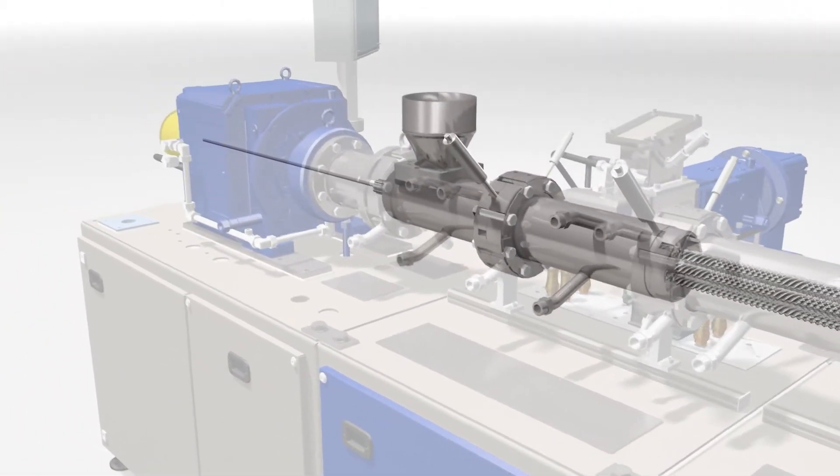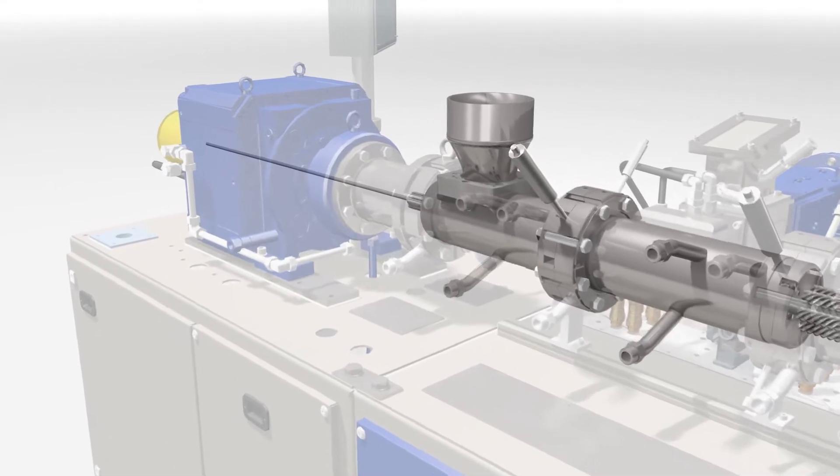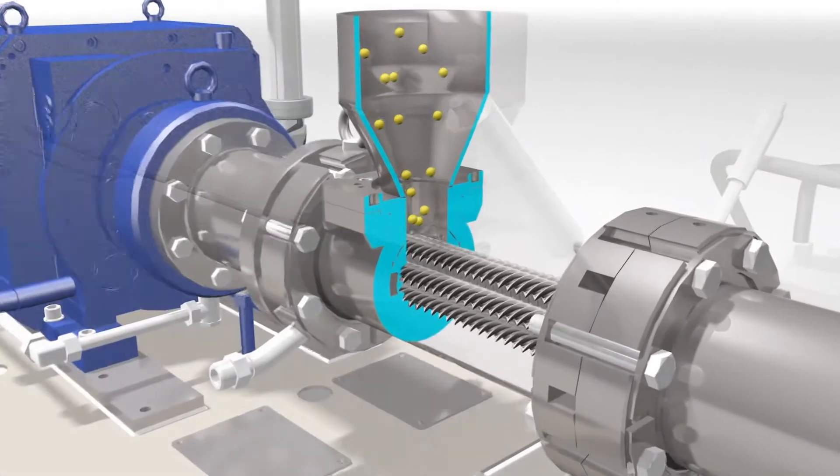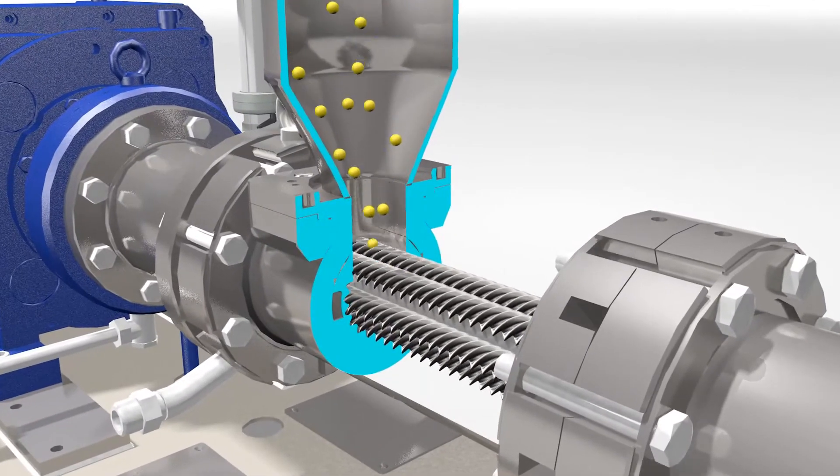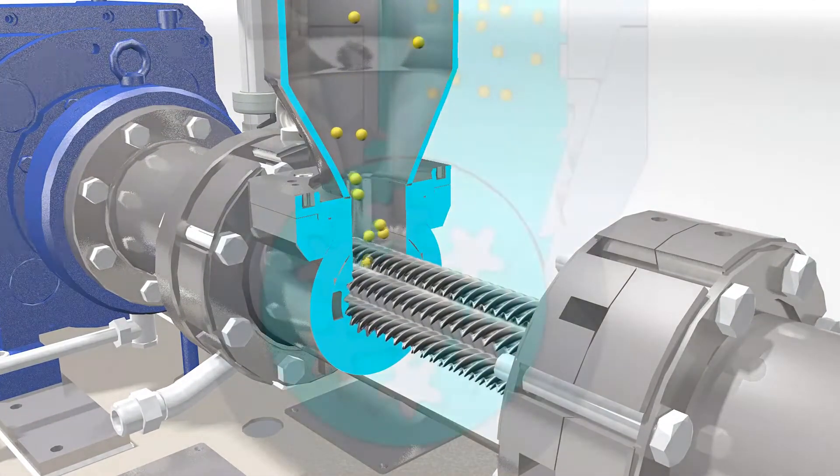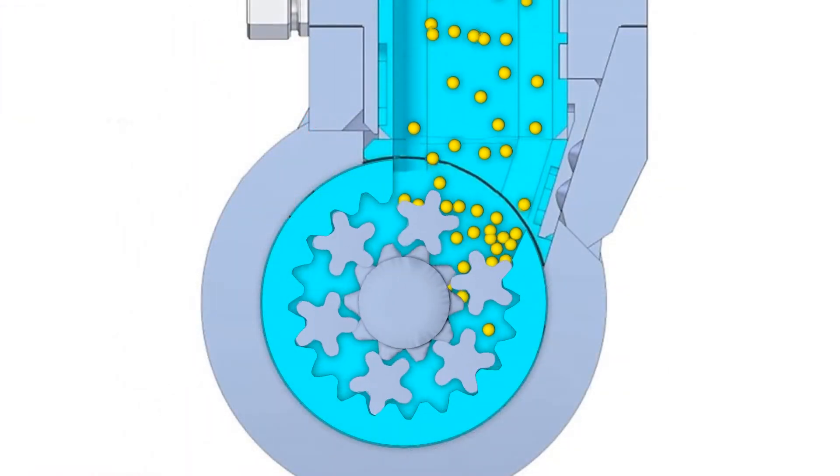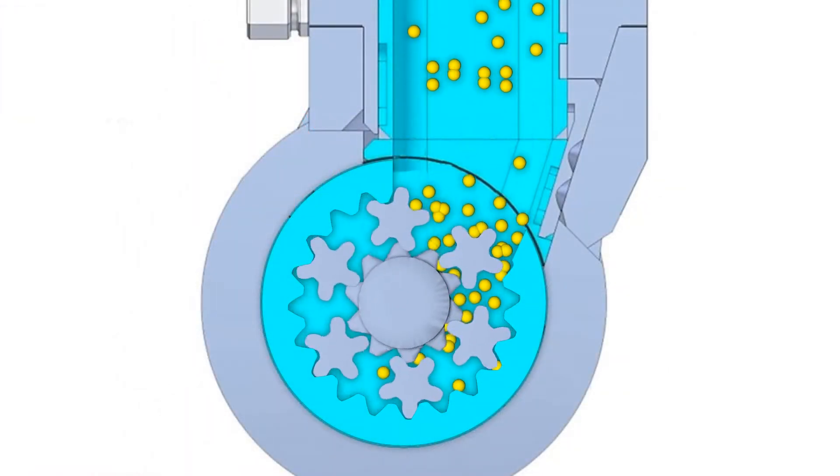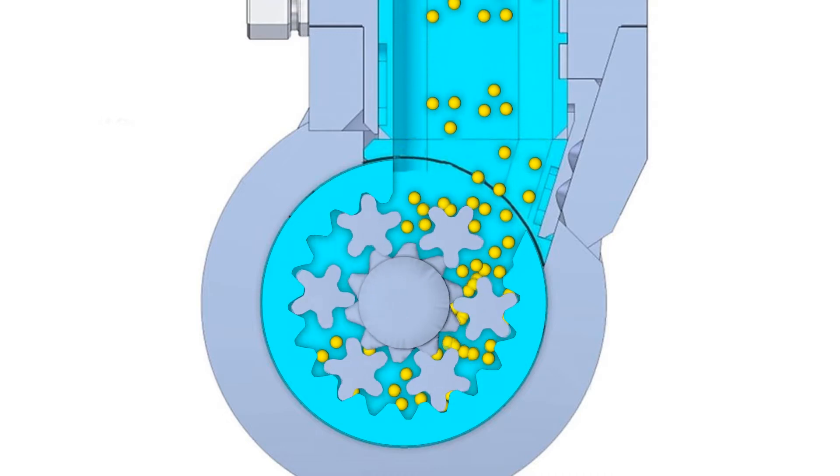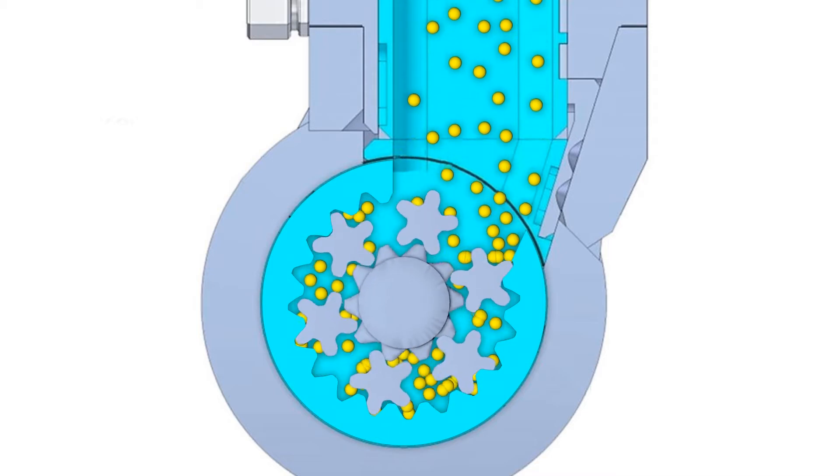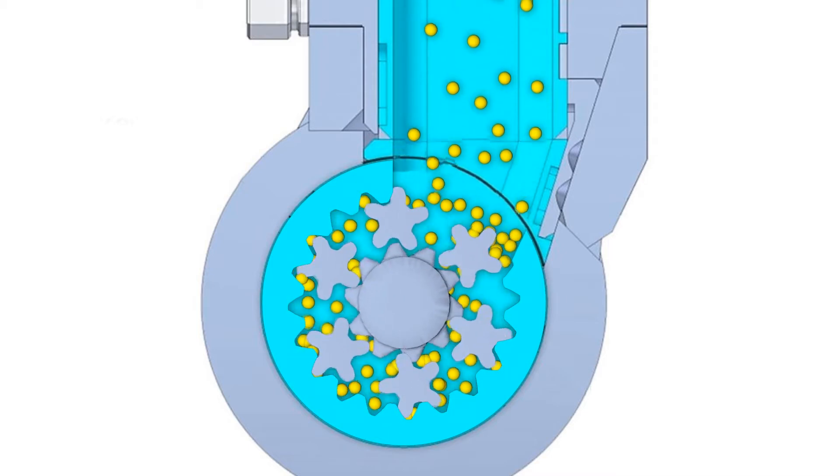Now let's take a closer look at the process of the planetary roller extruder. Due to the direct material feed in the planetary feed cylinder, called PE-Z for short, delivery fluctuations are compensated. This means that the supplied material can be absorbed and plasticized evenly. Even with partial quantities, the material is processed evenly and not intermittently. This delivery consistency is also important for the subsequent process.